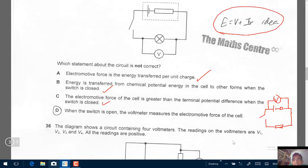I wrote it down here. E equals to V plus IR. This is your terminal PD. This is the PD across the internal resistance. So A, B and C are correct.